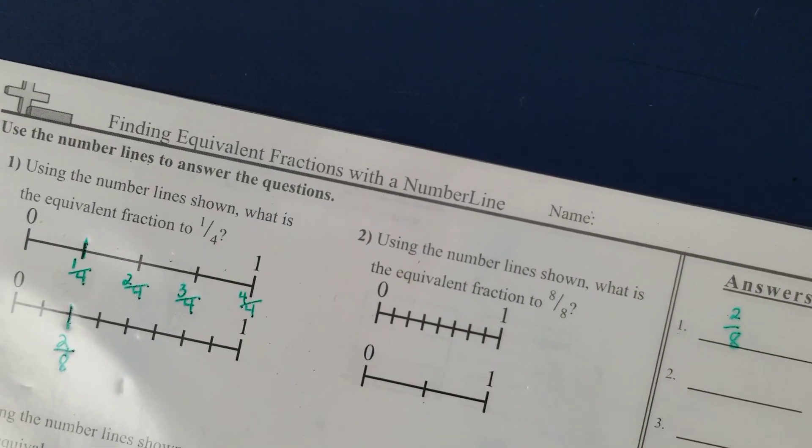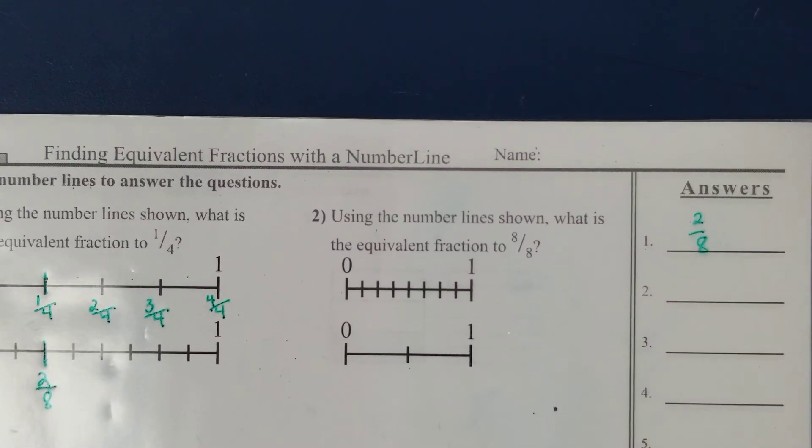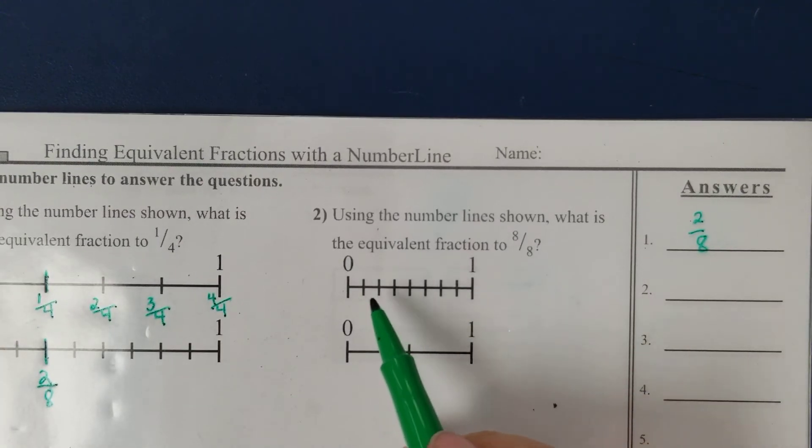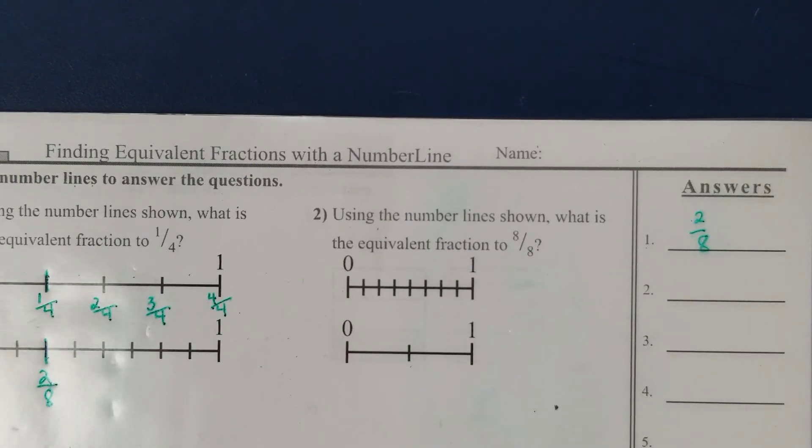I hope that is helpful. If you follow that strategy for the rest of this page, I think you will find that it works every time. Just remember to always start by counting the number of equal parts, making that your denominator on the bottom of the fraction. Your numerator is the number of parts that you've counted.